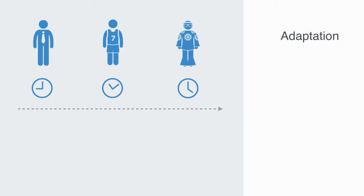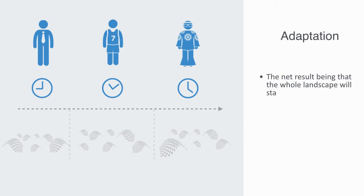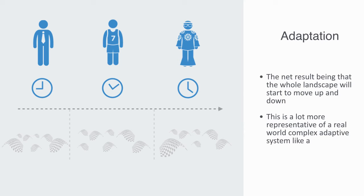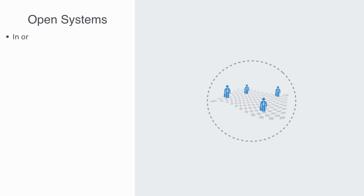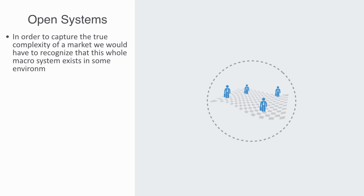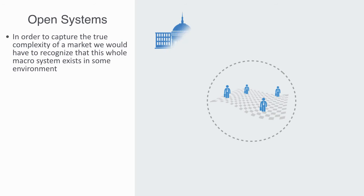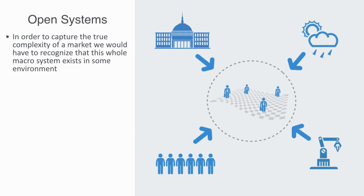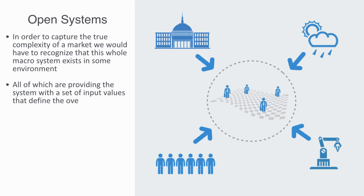If we go a step further and allow the agents in the market to adapt, then as the agents adapt and change their state, this will change the payoffs for other agents — with the net result being that the whole landscape will start to move up and down. This is a lot more representative of a real world complex adaptive system, like a competitive market where a business faces a number of different competitors who are also altering their behavior and strategies over time. Lastly, if we want to capture the true complexity of a market, we would have to recognize that this whole macro system does not exist in isolation — it is embedded within a particular social, environmental and technological context.